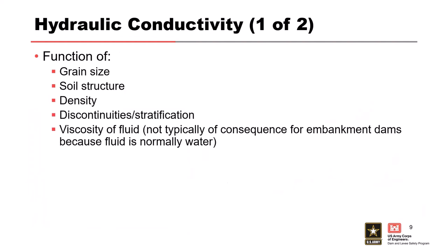Hydraulic conductivity is one of the hardest material properties to pin down in geotechnical engineering. It's a function of grain size, soil structure, density, discontinuities, stratification, and the viscosity of your fluid. In most analyses we're looking at just plain water and the temperature doesn't change dramatically underground, so the viscosity doesn't change dramatically. But those other properties can dramatically change the hydraulic conductivity — a small change in density can dramatically increase or reduce your permeability.